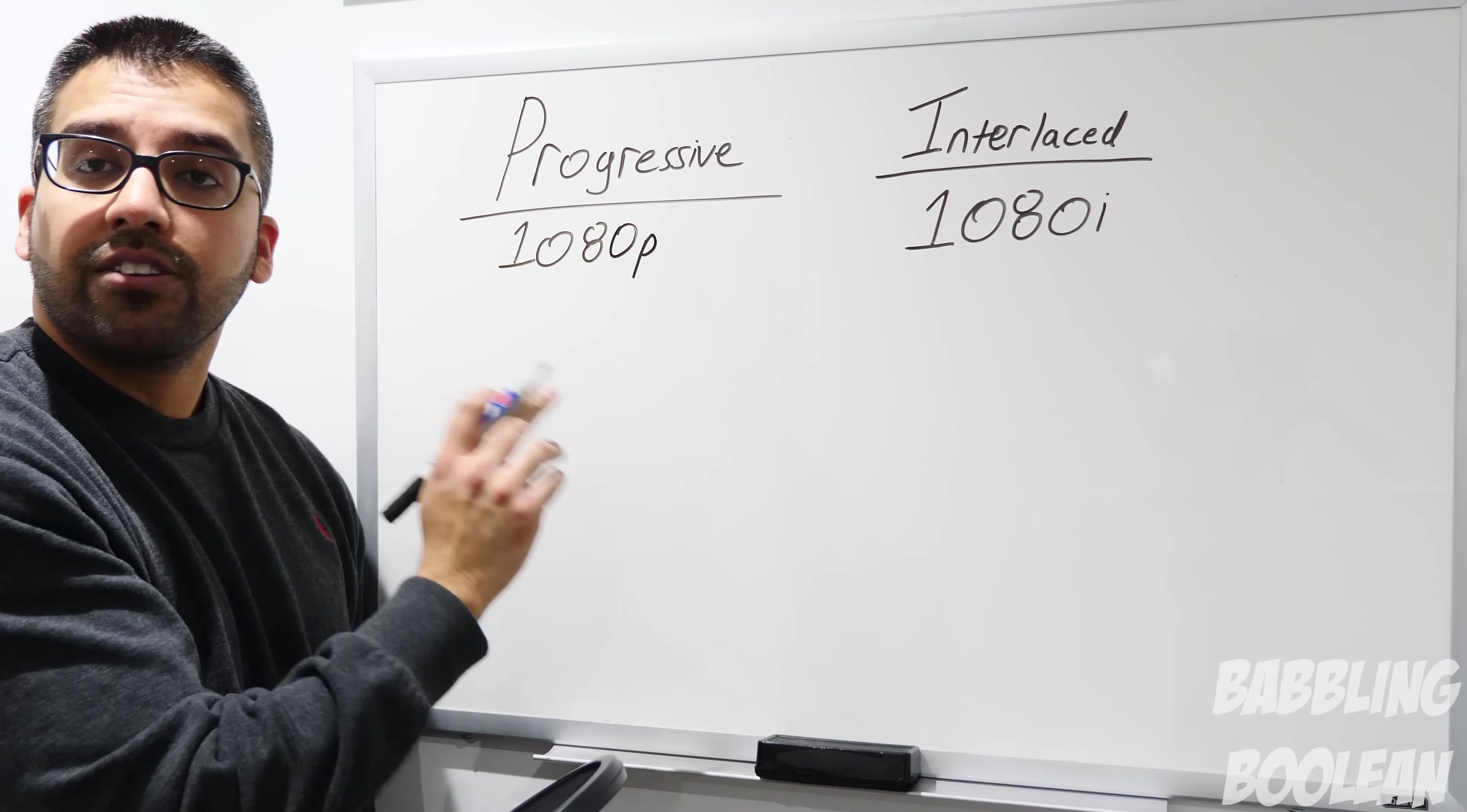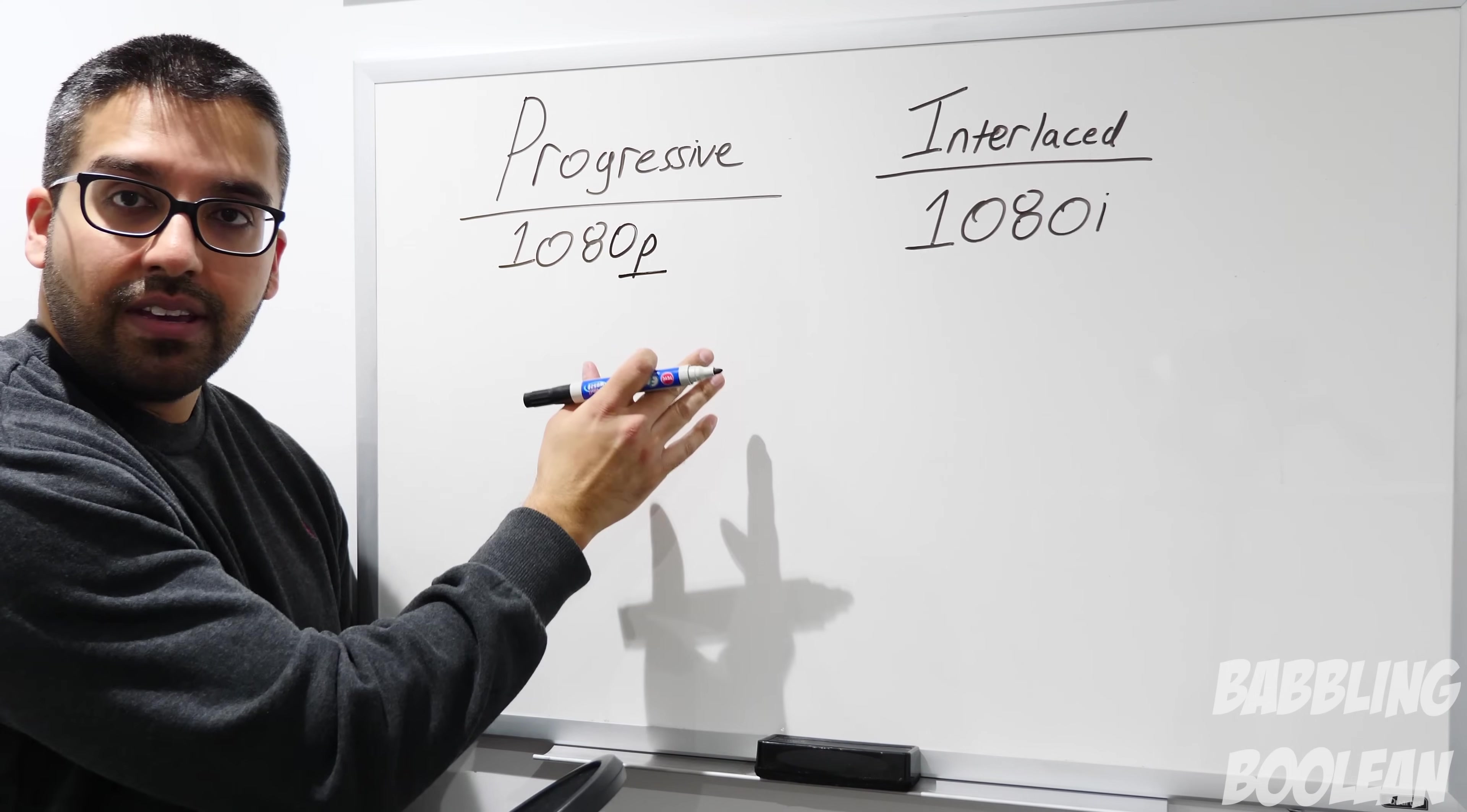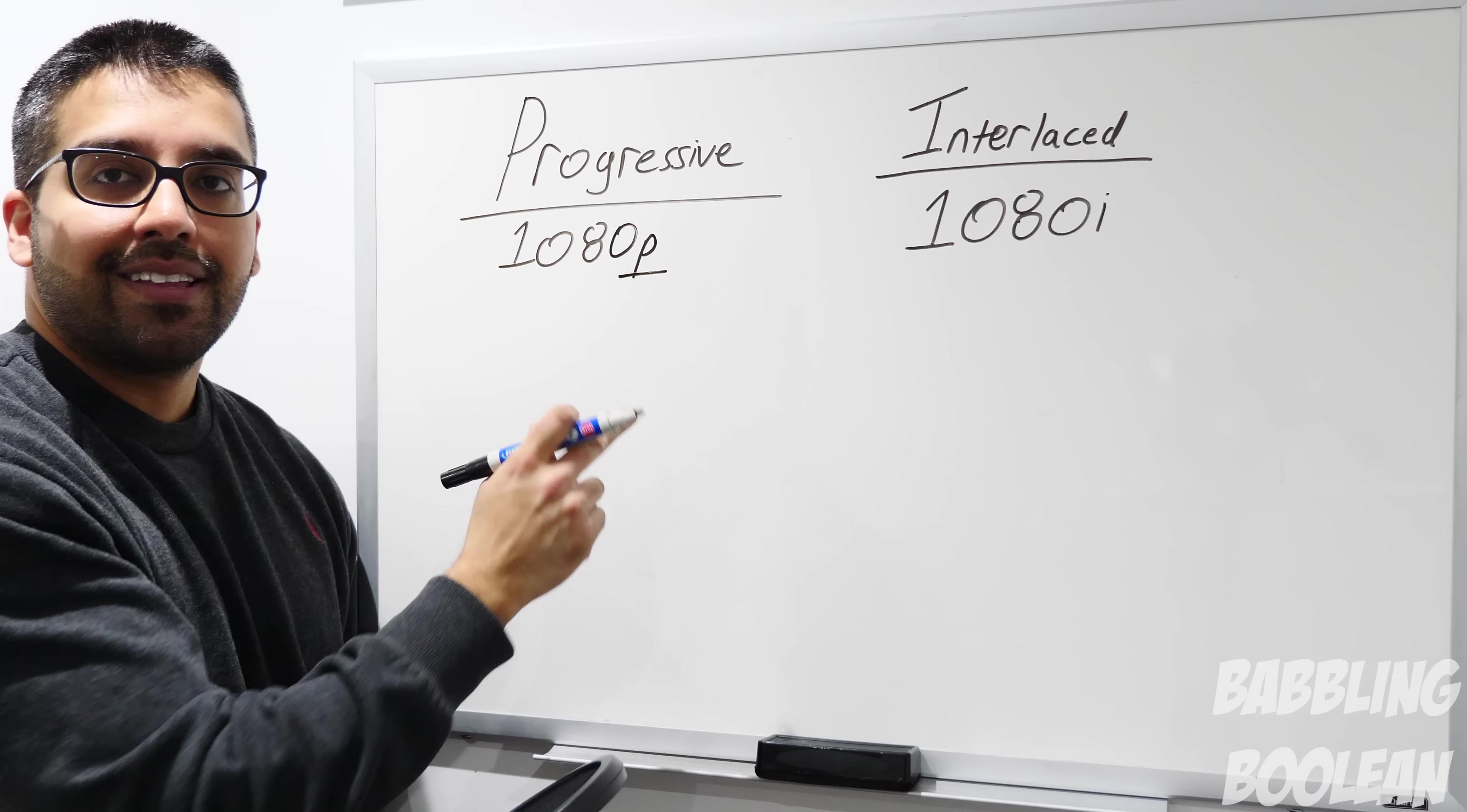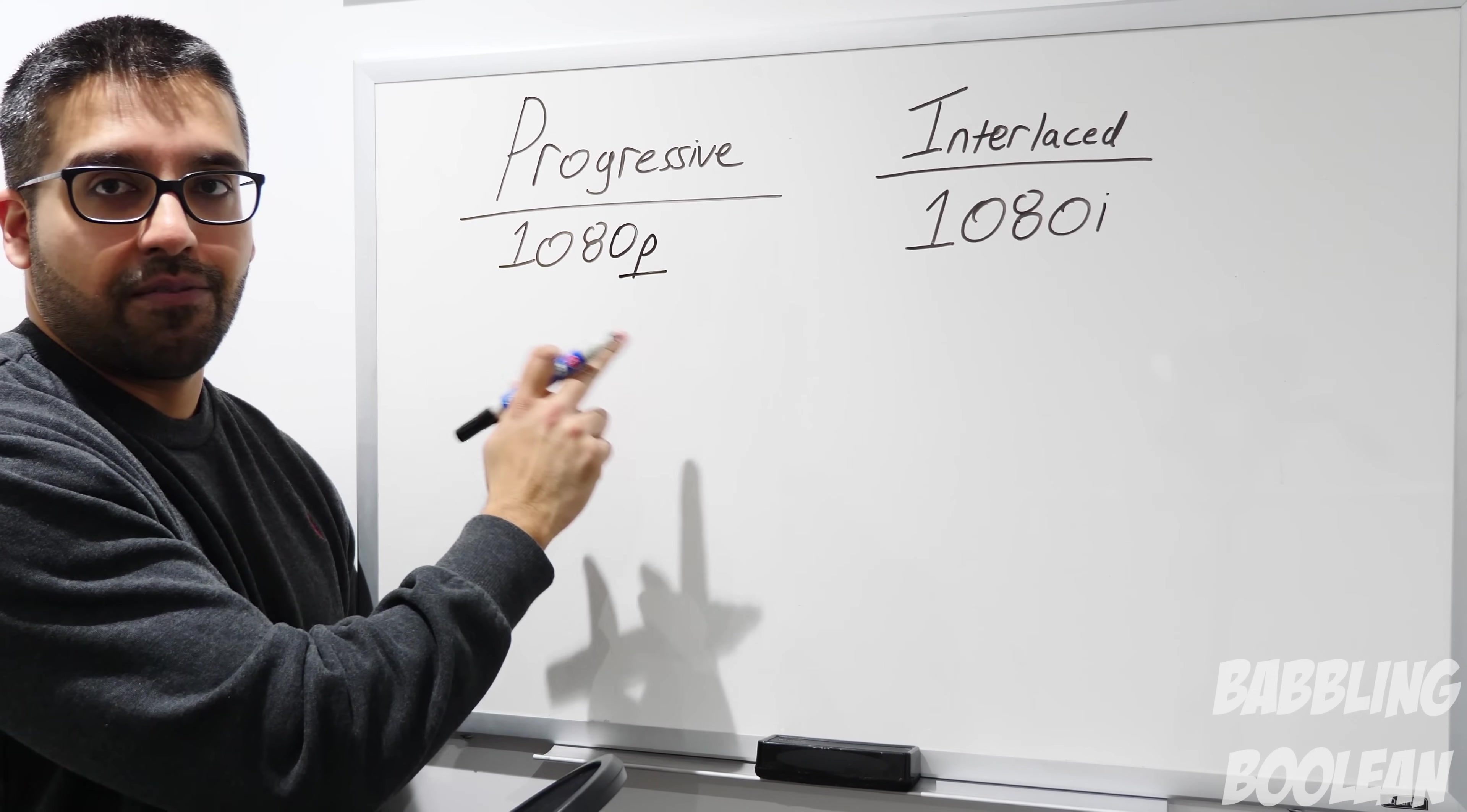Before we continue further, one thing I want to specify is that the P in 1080p, 720p, or 2160p which is 4K, does not stand for pixel. That is 100% incorrect if anyone tells you that.